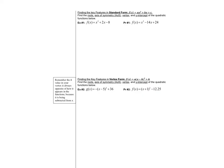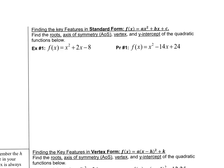Now let's look at some actual problems in standard form. Every form has something it reveals easily — the superpower of standard form is the y-intercept, which is just the c value. So the y-intercept here is simply −8.